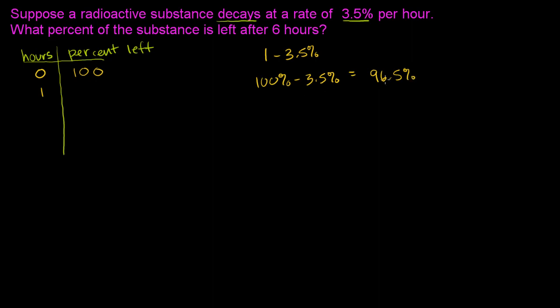So each hour, we're going to have 96.5% of the previous hour. So in hour one, we're going to have 96.5% of hour zero. Or 0.965 times 100, times hour zero. Now what happens in hour two? Hour two. Well, we're going to have 96.5% of the previous hour. We will have lost 3.5%, which means that we have 96.5% of the previous hour, so it'll be 0.965 times this. Times 0.965 times 100.